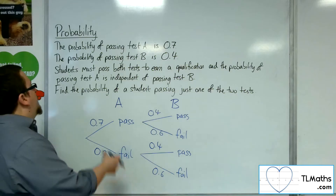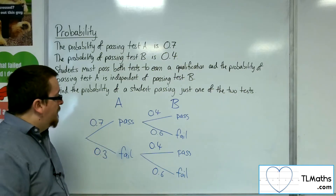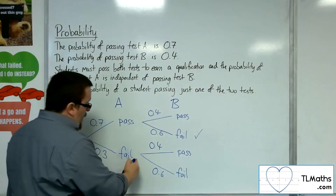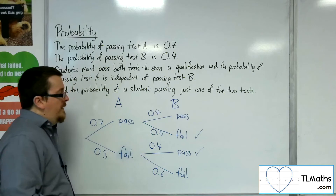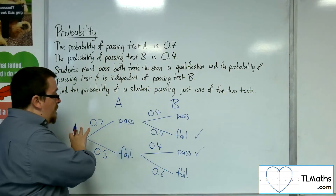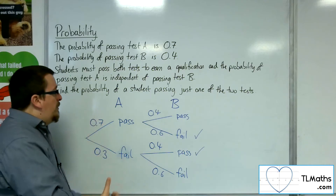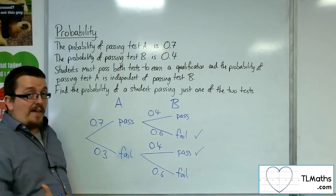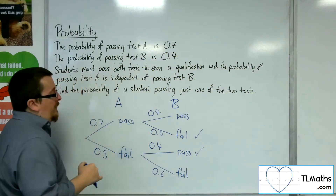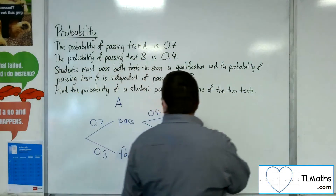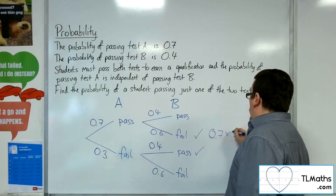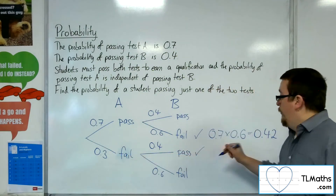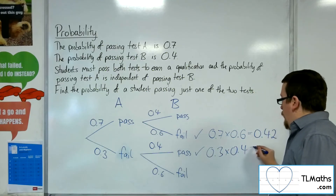If we're looking to find the probability of a student passing just one of the two tests, they either passed the first test and then failed the second one, or they failed the first test and then passed the second one. You're looking for the possible routes through from the left-hand side to the right-hand side, and you multiply along the branches. This is where the idea of independence comes in, allowing you to multiply probabilities together. Pass then fail would be 0.7 times 0.6, which is 0.42. Then we've got 0.3 times 0.4, which is 0.12.